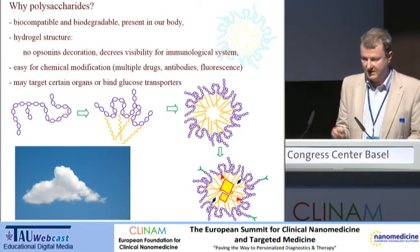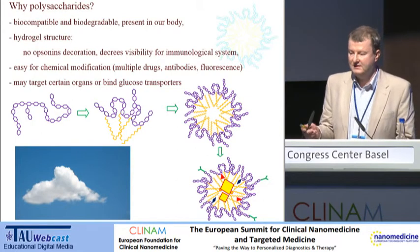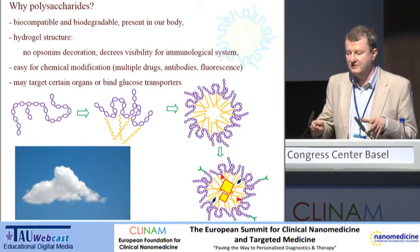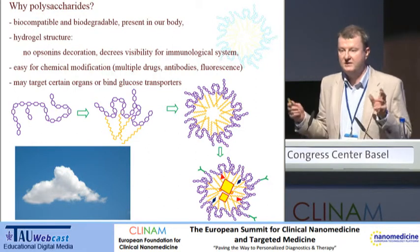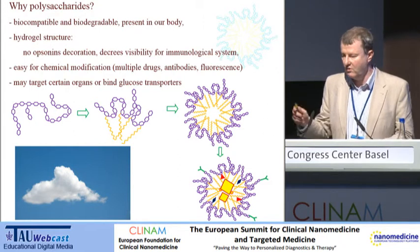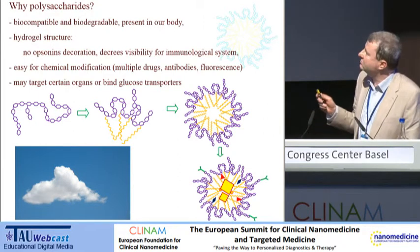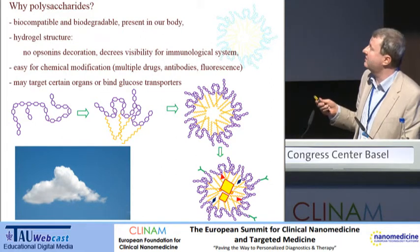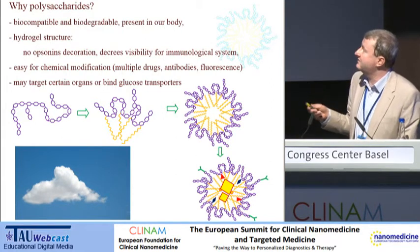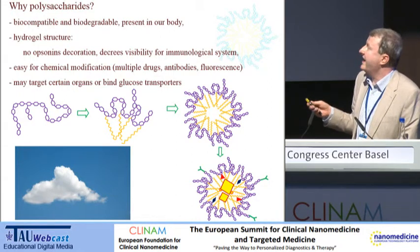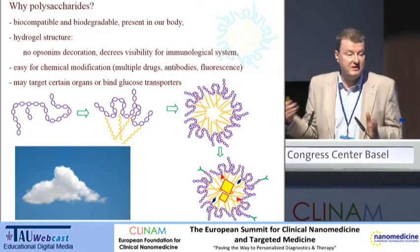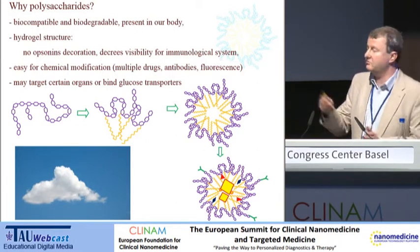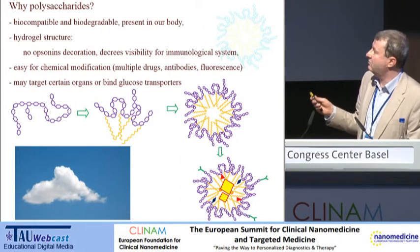Why polysaccharides? They are first biodegradable. They are widely present in our body. They have a hydrogel structure — I will show you later on that they are a sort of cloud, so the dry matter is really present in a very low amount. This hydrogel structure prevents opsonin decoration of the nanoparticles, decreasing visibility for the immunological system. And they are easy for chemical modification — you can modify as you want, attach this type of group, other types of groups, antibodies, and whatever you want.